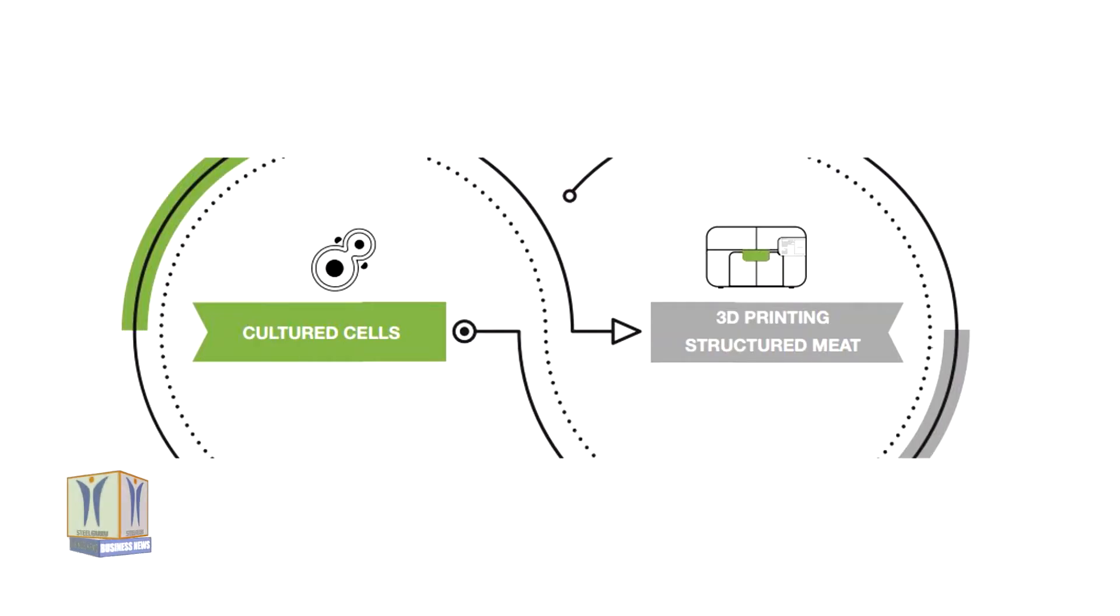3D printed animal-free meat is a milestone that demonstrates three significant process capabilities attained by Mayatech: successful sorting of stem cells into fat and muscle cells, allowing the synthesis of muscle fibers and fat tissue.